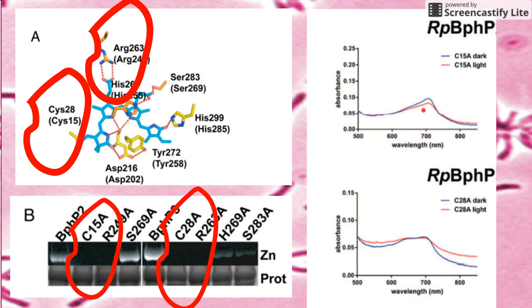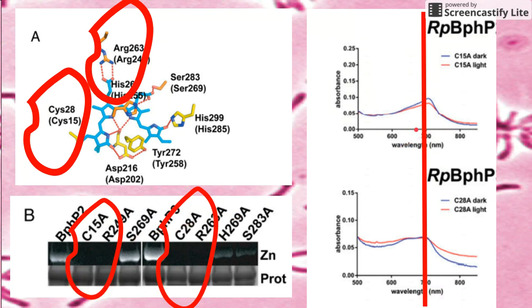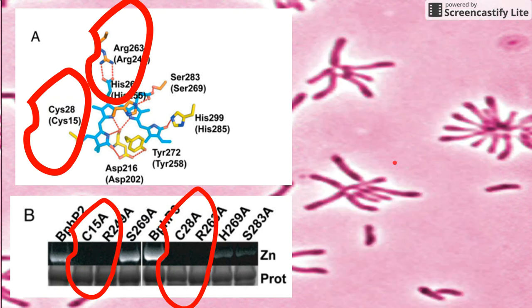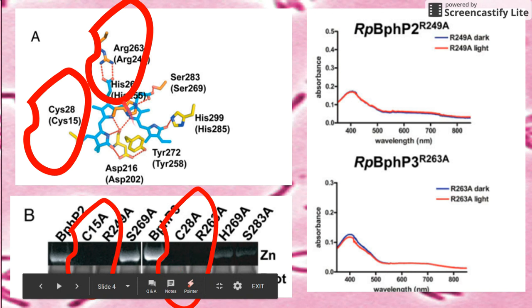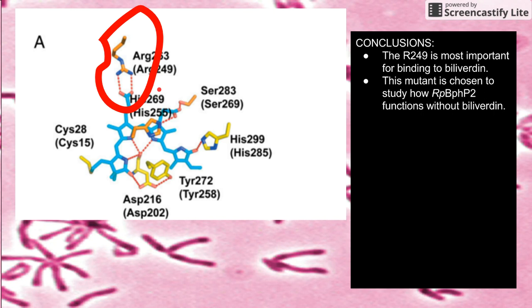In this graph, it's a deeper picture with the cysteine mutants. You can still see that they absorb a little bit of red light at the 700 nanometer wavelength. So even though they're not really bound to biliverdin, they're still absorbing a little bit of red light — they're not completely cut off from biliverdin. Meanwhile, with the arginine-263 or arginine-249 mutant, you can see at the same nanometer wavelength there's really no absorption peak. This is a more thorough mutant where biliverdin is completely out of the picture. So they chose arginine-249 to be the mutant to study phytochrome without biliverdin.